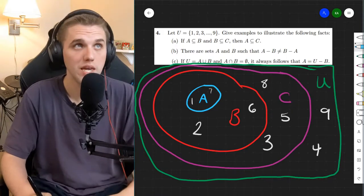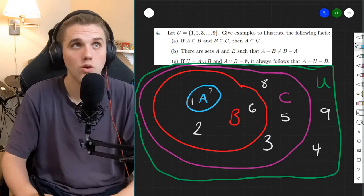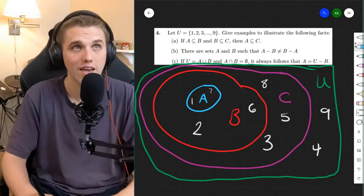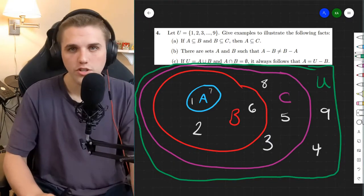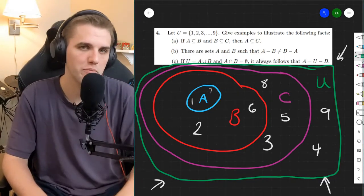All right, so for part B, this says, there are sets A and B such that A minus B doesn't equal B minus A. So first I want to ask a question. Does this work? Does this picture work for part B?